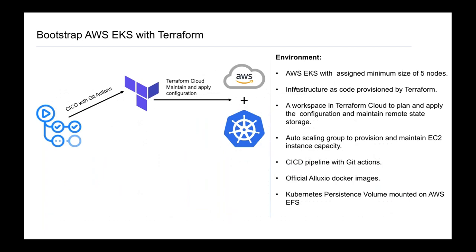For bootstrapping AWS EKS with Terraform: the environment for the prototype was on AWS EKS with an assigned minimum size of five nodes, using an EC2 Auto Scaling Group to maintain the required capacity. Infrastructure as code was achieved using Terraform, with its state maintained as a remote backend in Terraform Cloud in a workspace. CI/CD pipelines were built using GitHub Actions, and the persistent layer for the Alluxio port was on AWS Elastic File System, which is a managed NFS in AWS. The process was to make a branch out of master with the name of the assigned task — typically the Jira task number and name.